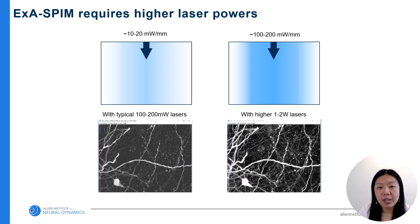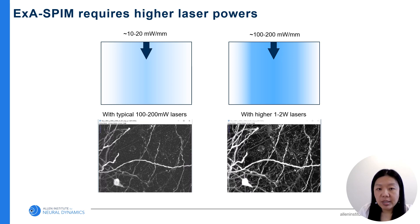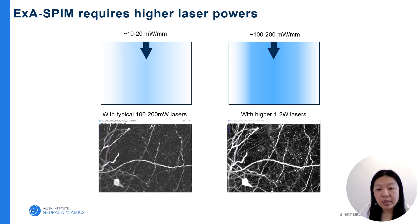One challenge for ExaSPIM is laser power. Since the field of view is larger, the same amount of light that used to be spread along a narrow sheet now has to cover about 5 times wider sheet, which is insufficient for good SNR. Here is an example: the same region imaged using the ExaSPIM system — the left image used a typical 100 to 200 mW laser, while the right used a 10 times higher power laser. Clearly, the right image has better SNR and offers more detailed information.